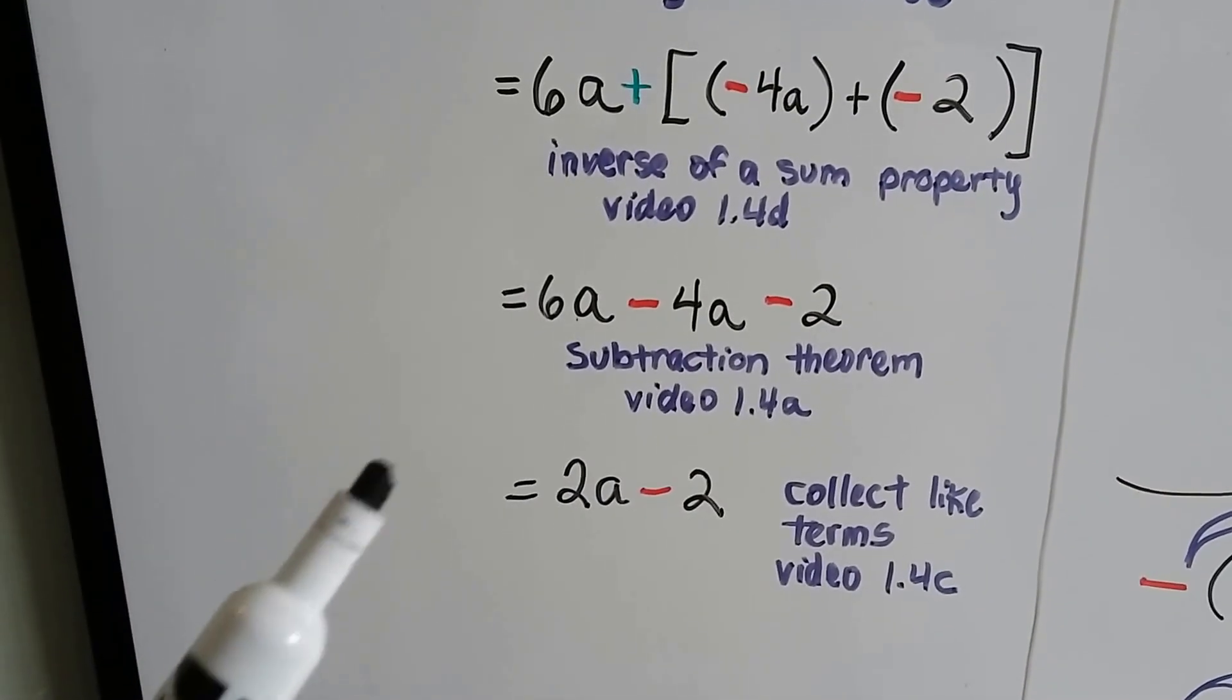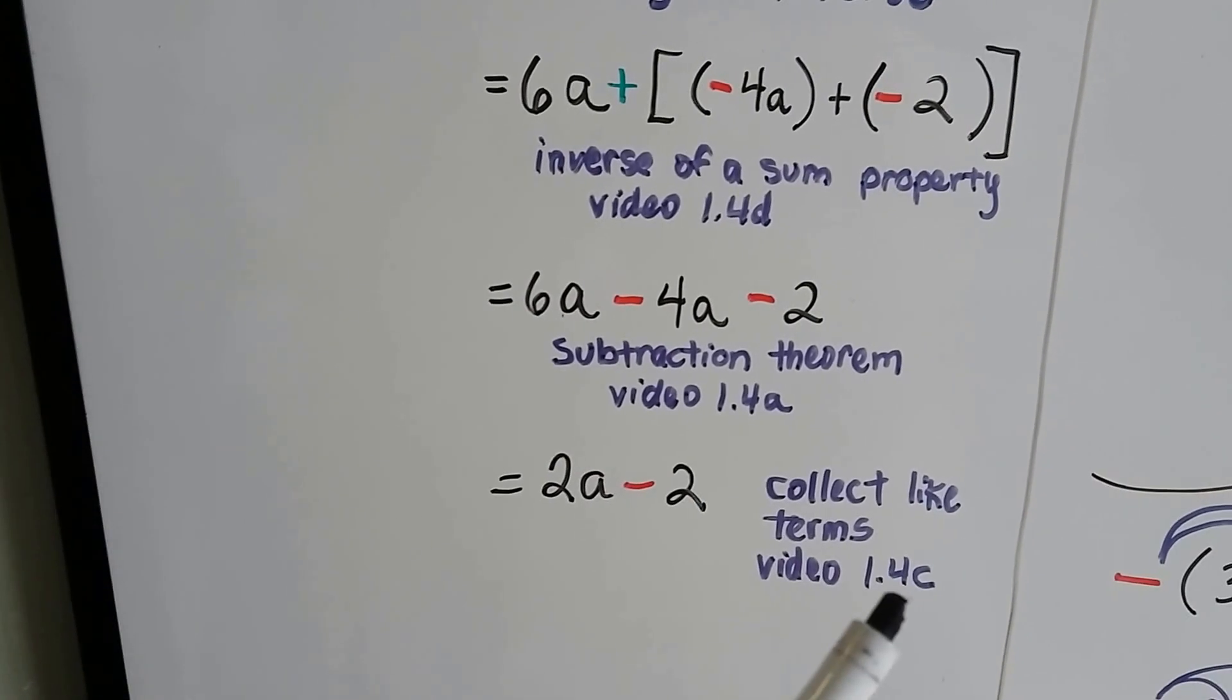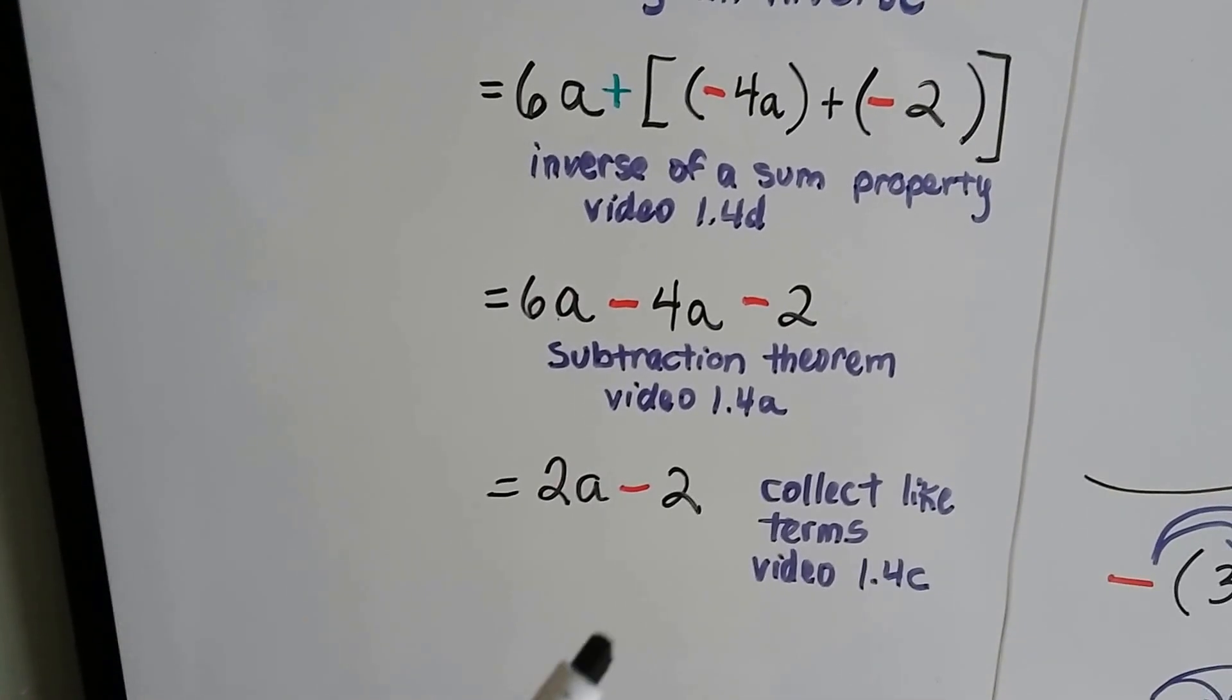And we keep simplifying and we get 6a minus 4a minus 2. That's the subtraction theorem from 1.4a video. And when we combine like terms, collect like terms,